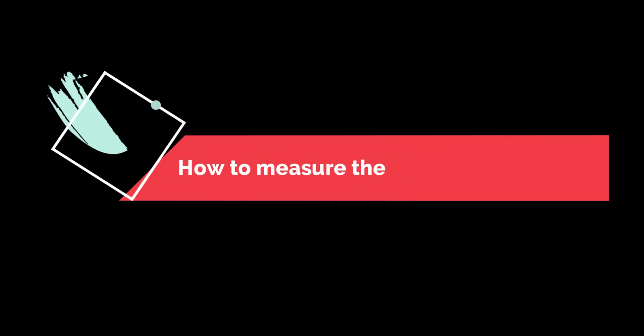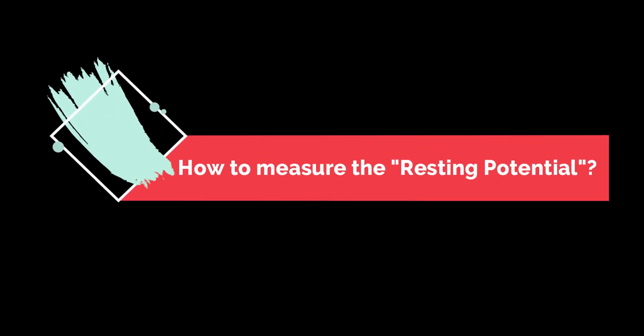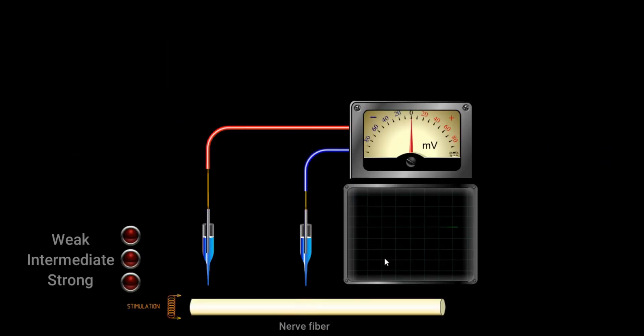Assalamu alaikum and hello everybody. In this video I'm going to show you how to measure the resting potential by using this animation. To measure the resting potential we need to use an oscilloscope or a voltmeter. This is the axon of a neuron.